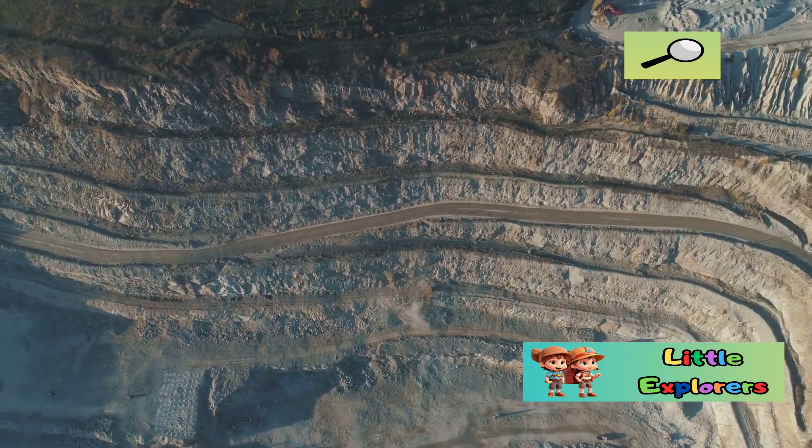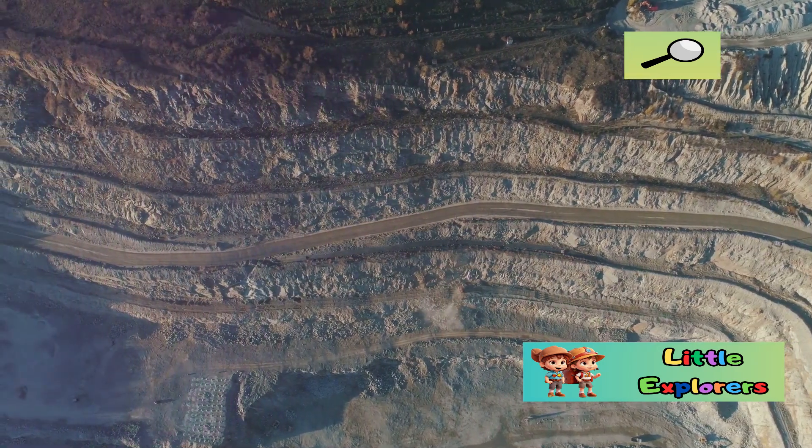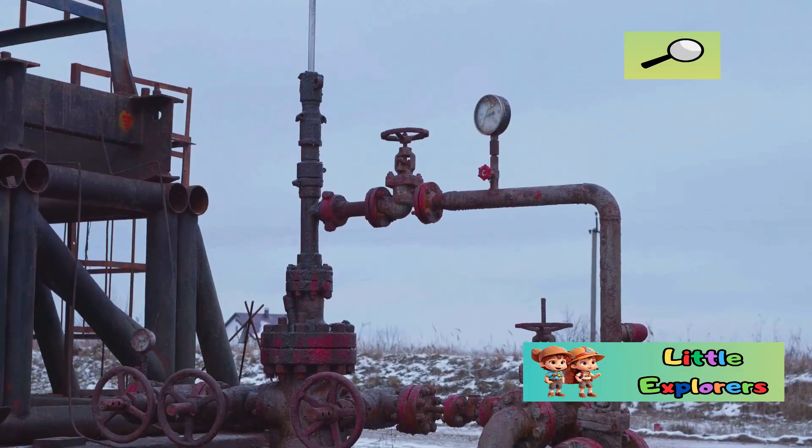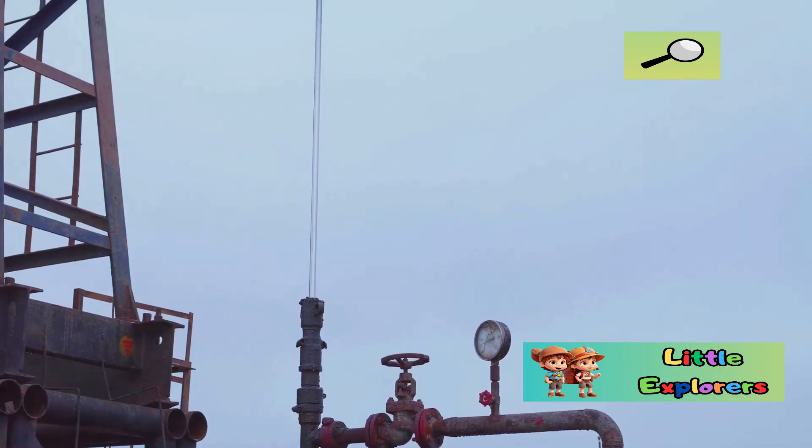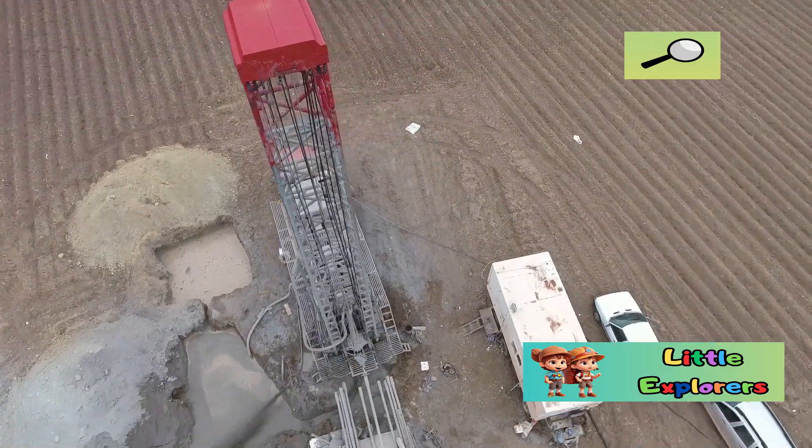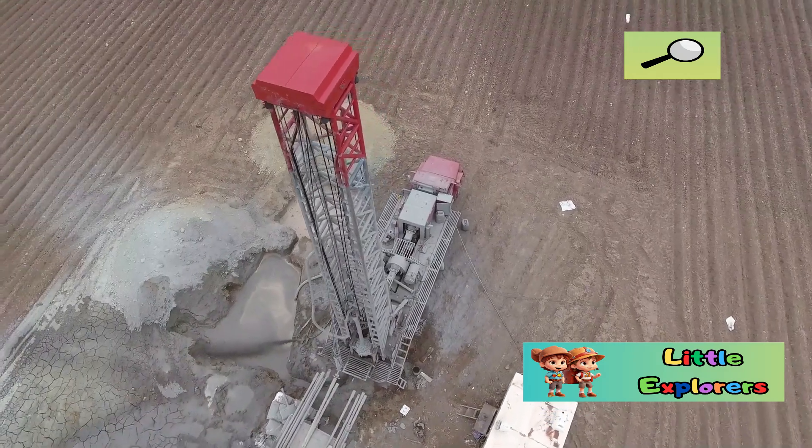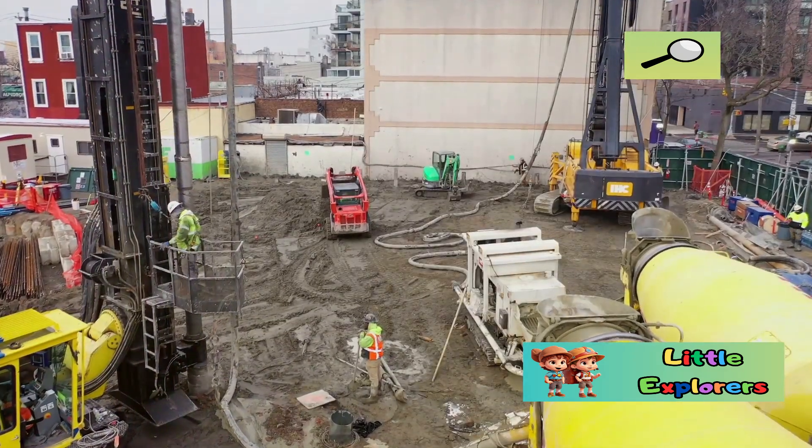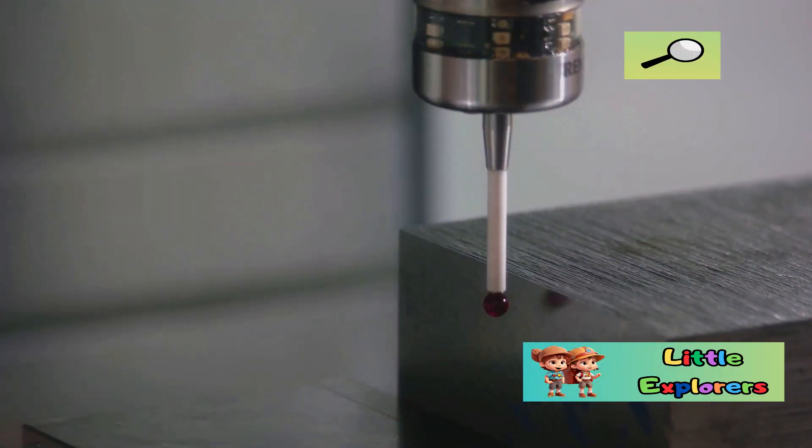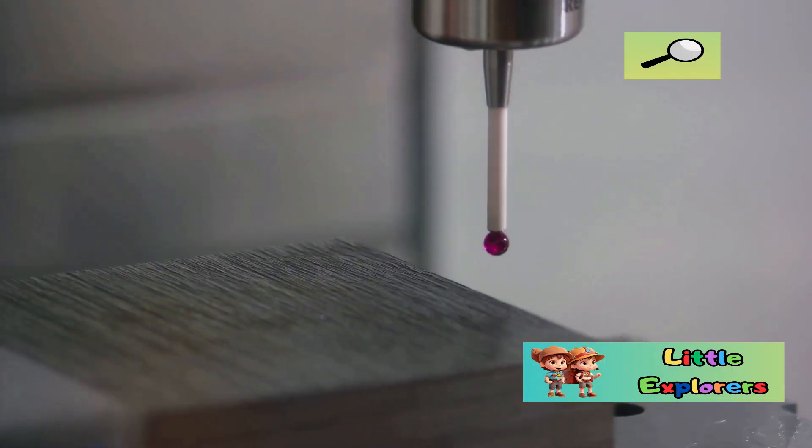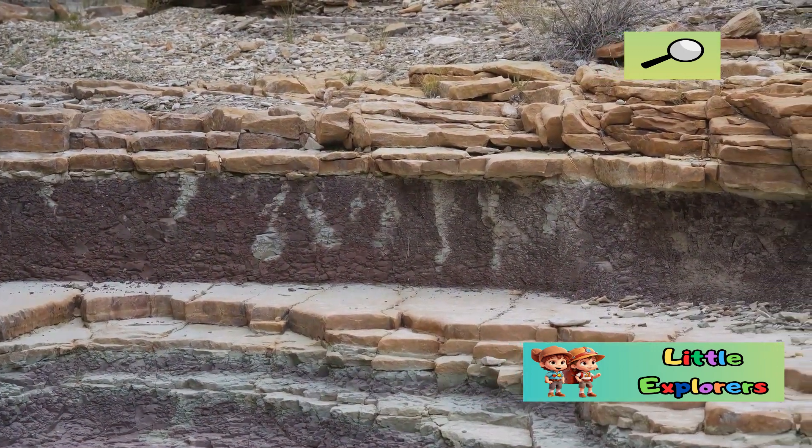The most famous deep drilling project is undoubtedly the Kola Super Deep Borehole, located in Russia. This ambitious project aimed to drill as deep as possible into the Earth's crust. Starting in 1970, it took almost 20 years to reach its final depth of over 12 kilometers. The Kola Super Deep Borehole was a monumental engineering achievement. It pushed the limits of drilling technology and provided invaluable scientific data. Although it only scratched the surface of the Earth's crust, it revealed fascinating insights into our planet's composition and history.